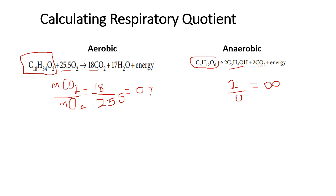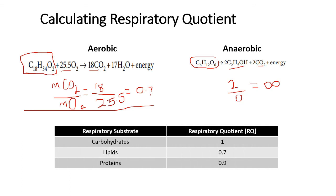When you calculate for a certain substrate under aerobic conditions, here are the respiratory quotients for the three key groups used in respiration. Carbohydrates have a respiratory quotient of 1, meaning the amount of CO₂ given off is equal to the amount of oxygen taken in. Lipids have an RQ of 0.7, meaning the CO₂ given off is less than the oxygen taken in. Proteins have an RQ of 0.9, which is very close to carbohydrates.